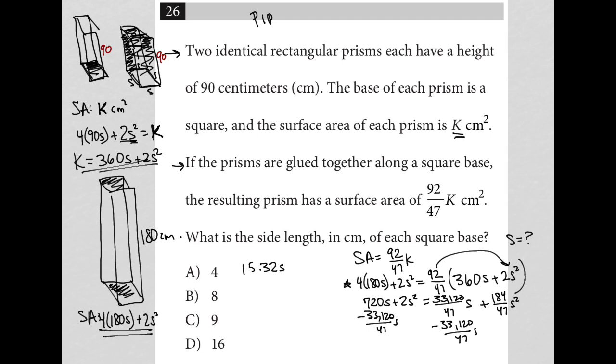And then I'm going to subtract this as well. 184 over 47s squared. So then what is 184 divided by 47? That's a negative. I'm adding that to 2. So I'm going to have minus 1.91s squared equals 0.